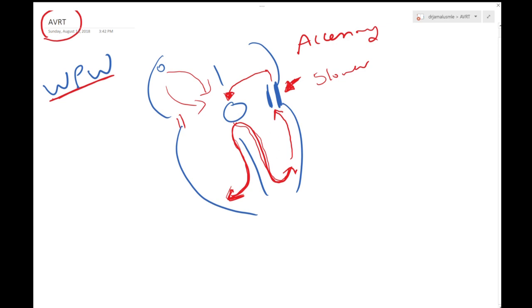This is what we call orthodromic. Orthodromic means that down is through the AV node, up is through the accessory pathway.